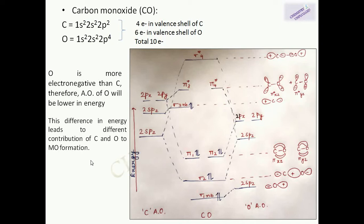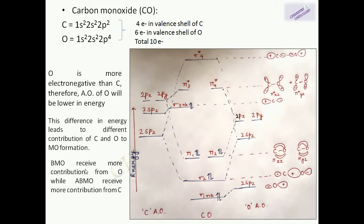As discussed earlier, in heteronuclear diatomic molecules the molecular orbitals are not symmetrical. This unsymmetrical nature leads to a difference in energies of bonding and antibonding molecular orbitals. The bonding and antibonding molecular orbitals receive different contributions from carbon and oxygen. Bonding molecular orbitals receive more contribution from oxygen, while antibonding molecular orbitals receive more contribution from carbon — i.e., from the less electronegative atom.